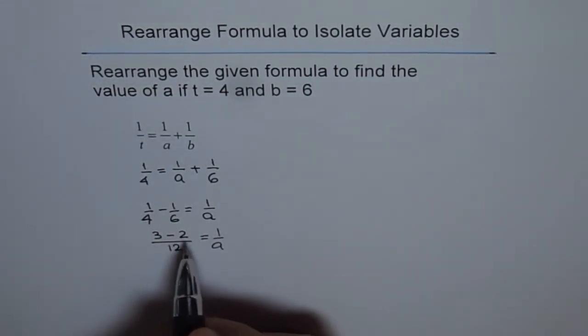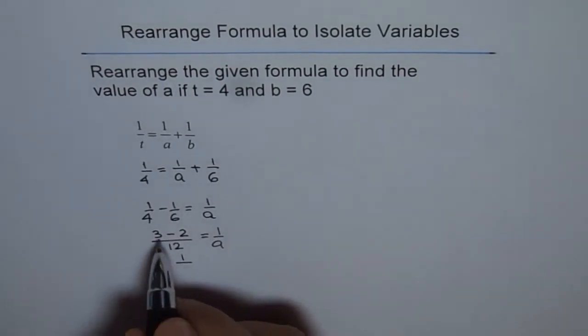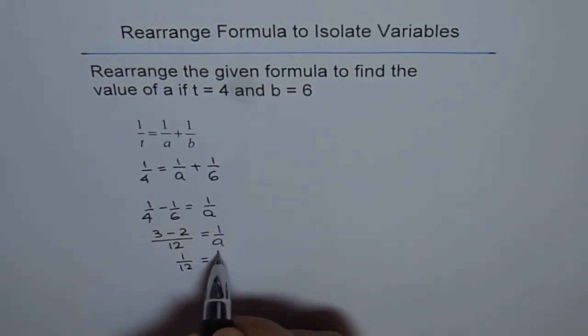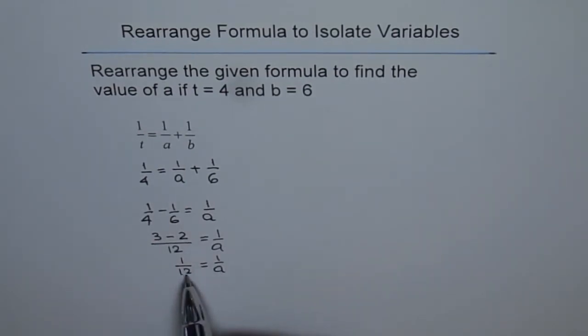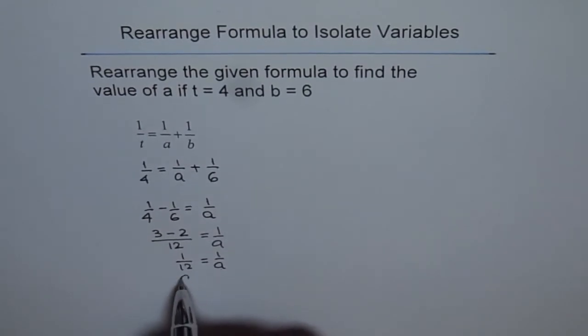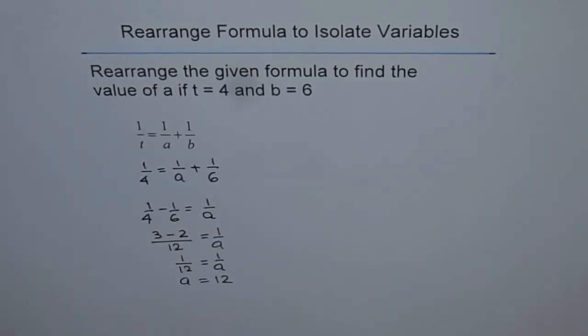And that gives us 1 over 12. 3 minus 2 is 1. 1 over 12 equals 1 over A. And from here, we can say A is 12. So we get our answer as A equals 12.